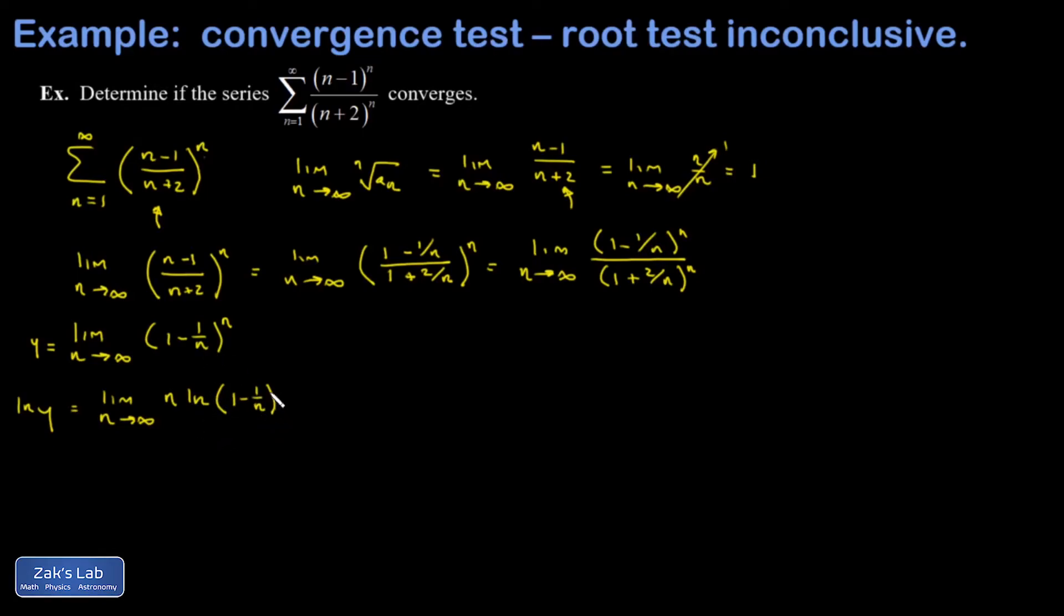I'm going to use the exponent properties of natural logs. If I look at the argument of the natural log function, 1 minus 1 over n, well 1 over n is getting close to 0. So that's getting close to the natural log of 1, which is 0. This is an infinity times 0 indeterminate form. I'm going to use L'Hopital's rule on this. Notice that I switch from an n to an x because I'm about to take derivatives.